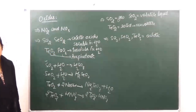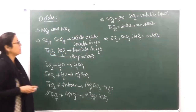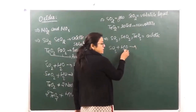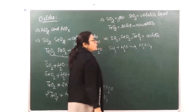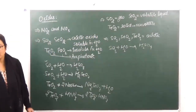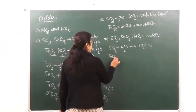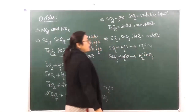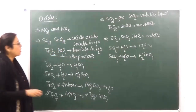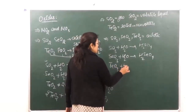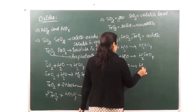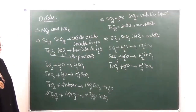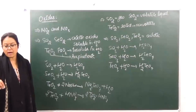All three of them are going to behave as acidic oxides, and their acidic nature can be explained by their reaction with water to give respective acids. SO3 reacts with H2O to give sulfuric acid H2SO4. SeO3 reacts with water to give H2SeO4 — selenic acid. TeO3 plus H2O gives H2TeO4 — telluric acid. Because they all give acids when reacting with water, they are all acidic oxides.